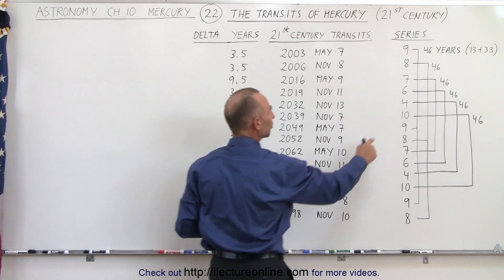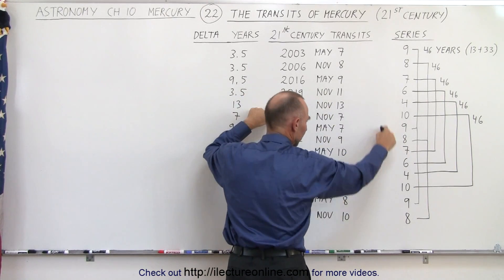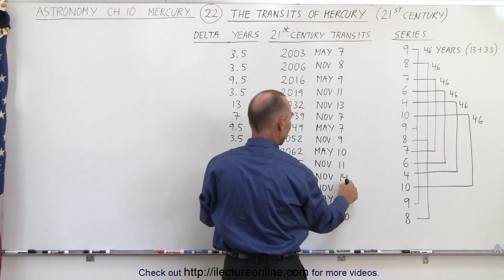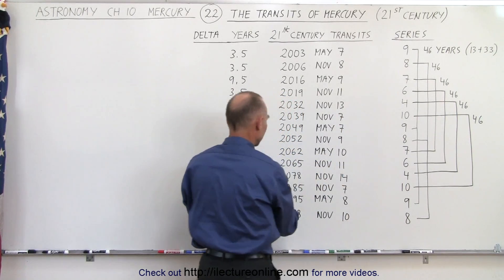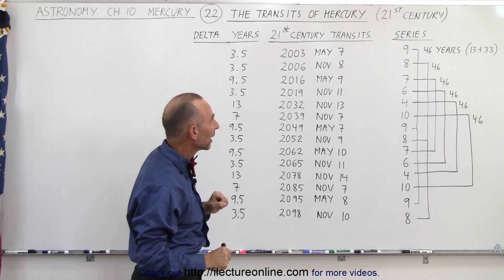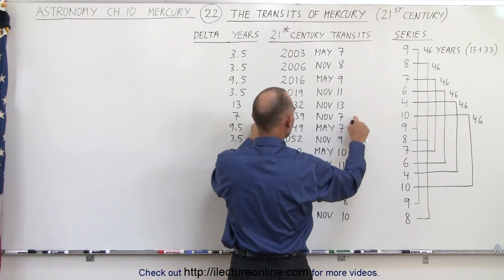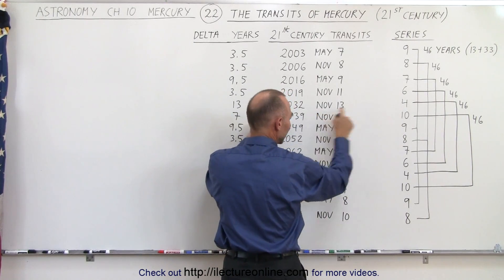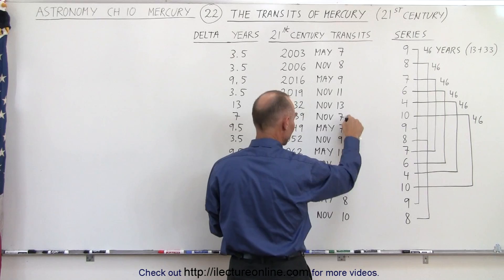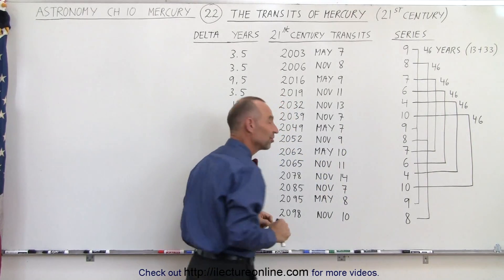Here we have series 4. That will be November 13th in the year 2032. The next event will be November 14th — one calendar day later — 46 years after this event. And then we have series 10, November 7th in 2039. We have another series 10, November 7th, the same calendar date, 46 years later.